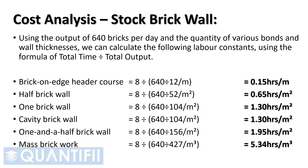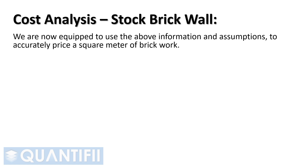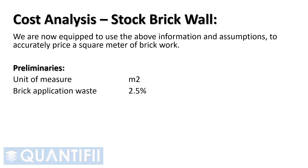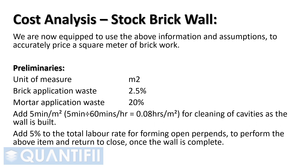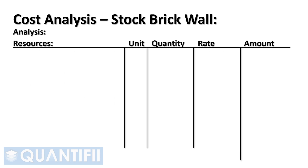We are now equipped to use the above information and assumptions to accurately price a square meter of brickwork. Let's assume the following: unit of measure is square meters; brick application waste is 2.5%; mortar application waste is 20%. Add 5 minutes per square meter — 5 minutes divided by 60 minutes per hour equals 0.08 hours per square meter — for cleaning of cavities as the wall is built, at the laborer's rate. Add 5% to the total labor rate for forming open perpins and returning to close once the wall is complete. Using the layout for a cost analysis with columns for resources, unit of measure, quantity, rate, and amount, we can now calculate the cost of a square meter of brickwork.